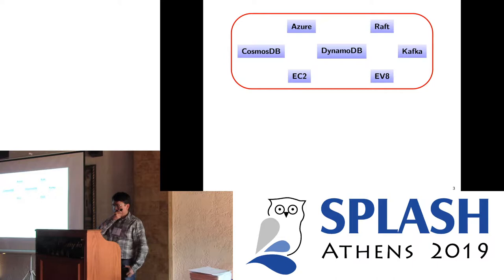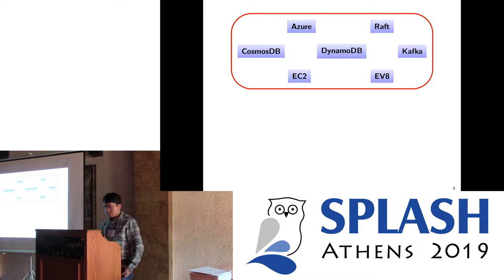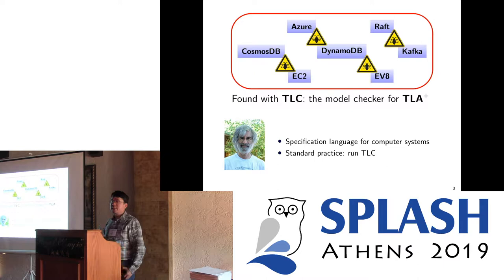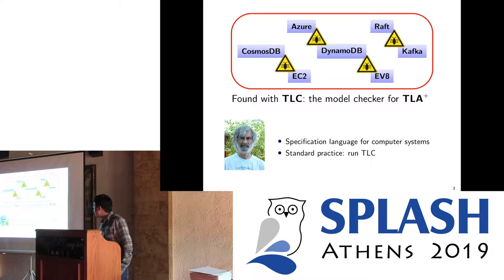The first question is: why do we need to use TLA+? On the screen you can see many industrial projects, for example from Amazon or Microsoft, and they have a common thing — at some point in the development the code was buggy. People found bugs by using the TLC model checker. TLA+ is a language designed by Leslie Lamport to specify and reason about concurrent and distributed algorithms.